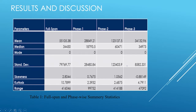Skewness is the measure of how much the probability distribution of a random variable deviates from the normal distribution. For the full span, phase one, and phase two, the skewness values are positive, while in phase three it has a negative skewness. Similarly, in the case of kurtosis, phase three has a distinctly different value compared to phase one and phase two.